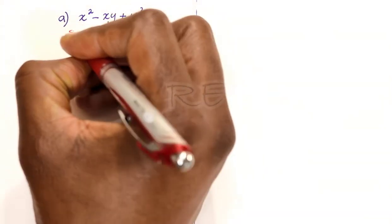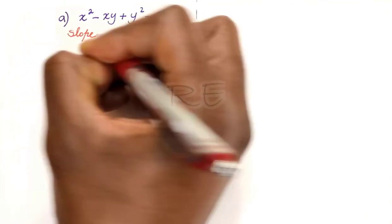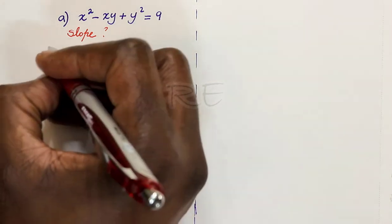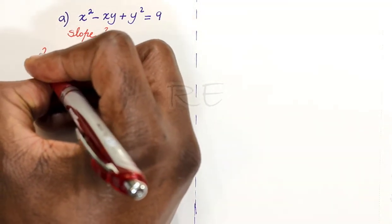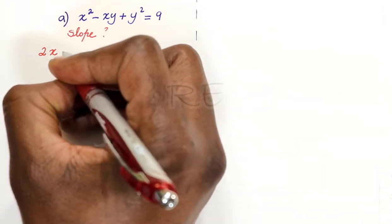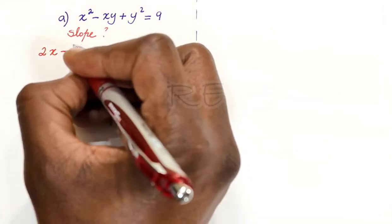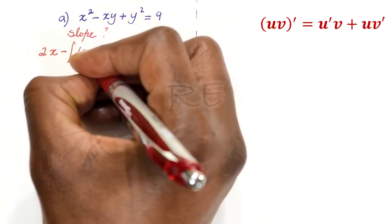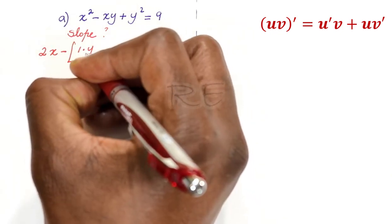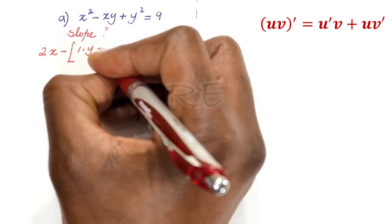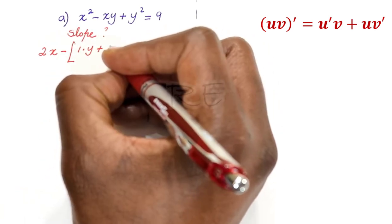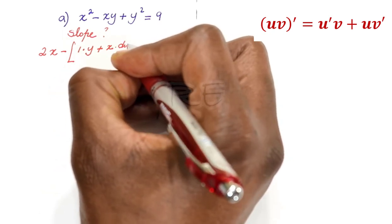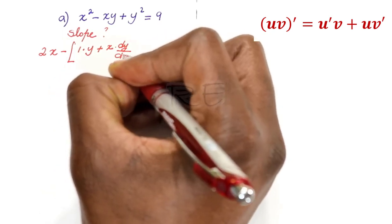The derivative of x squared, we derive normally, is equal to 2x minus. This is a derivative of a product, u prime v. So it's going to be 1 times y plus u times the derivative of y, which is 1 dy dx.